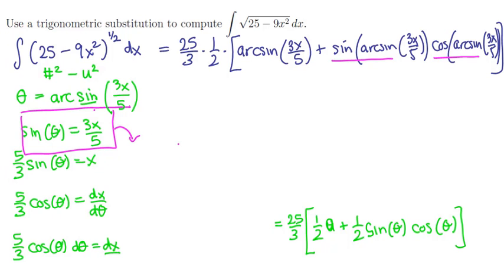If that's the angle theta then the opposite side is a 3x and the hypotenuse is a 5.